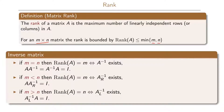For some matrices we can find the inverse. There are three different cases. If m equals n, so the number of rows equals the number of columns, and the rank of A is m, then we have an inverse. The inverse commutes: A times A-inverse equals A-inverse times A, which equals the identity matrix I. If the rank is less than m, then there is no inverse.